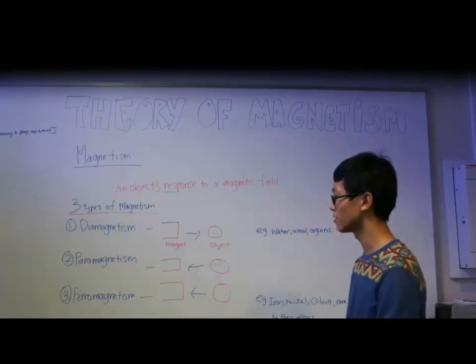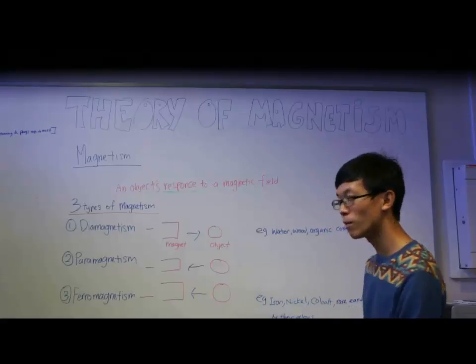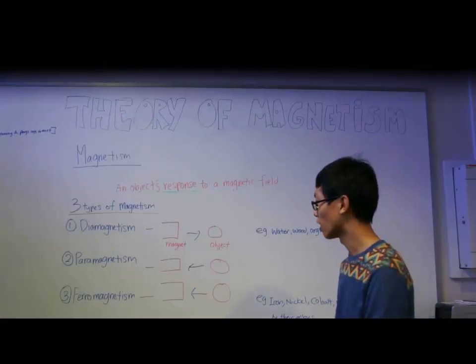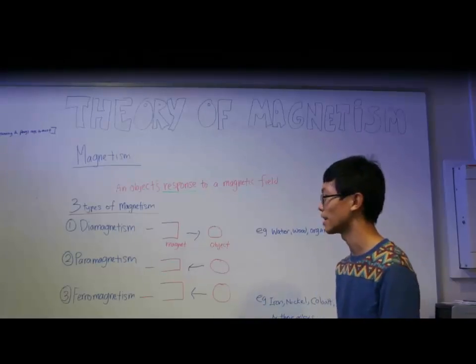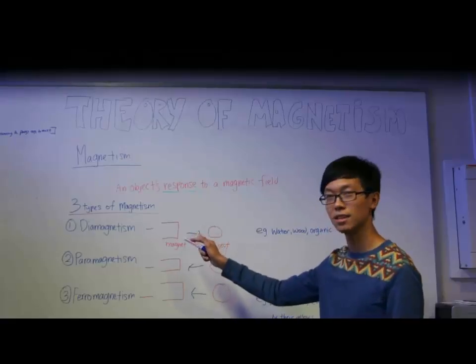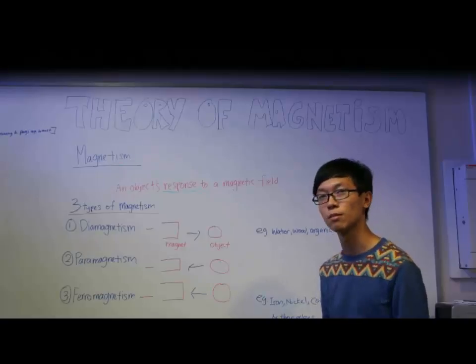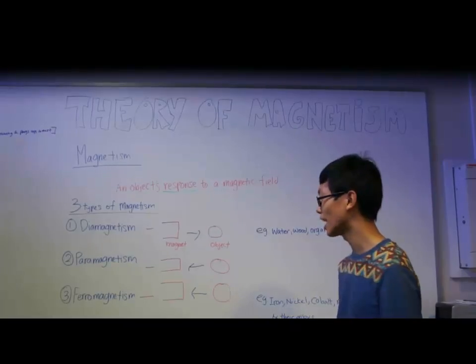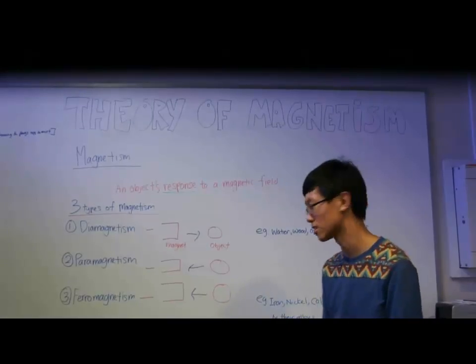So you can ask, what is the difference between paramagnetism and ferromagnetism? Well actually, ferromagnetism is a thousand times stronger compared to paramagnetism and diamagnetism. We can classify diamagnetism and paramagnetism as non-magnetic materials, while anything under ferromagnetism we would classify as magnetic materials.